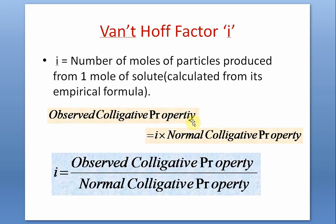The van't Hoff factor i is very important in colligative properties. The van't Hoff factor is required only when there is a chance of dissociation or association of the solute; otherwise i equals one. i is defined as the number of moles of particles produced from one mole of solute calculated from its empirical formula. For example, for NaCl: 58.5 g is one mole, but if completely dissociated it forms two moles of particles, so i = 2 for sodium chloride.